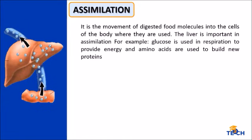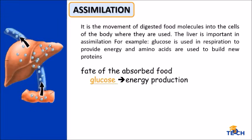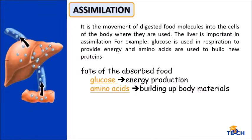Assimilation is the movement of digested food molecules into the cells of the body, where they are used. The liver is important in assimilation. For example, glucose is used in respiration to provide energy, and amino acids are used to build new proteins. From the absorbed food: glucose for energy production, amino acids for building up body materials, and fats for energy reserve.